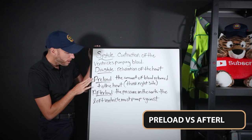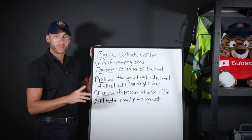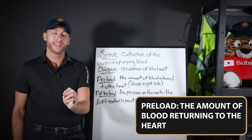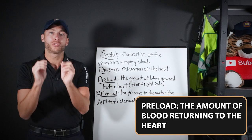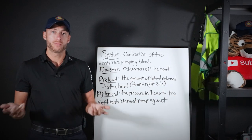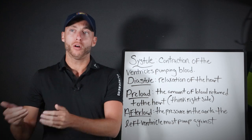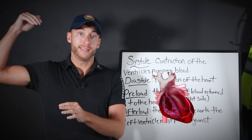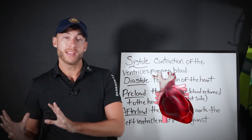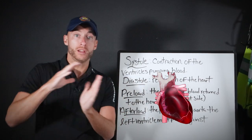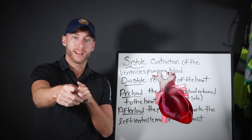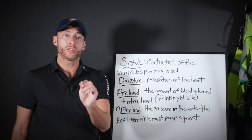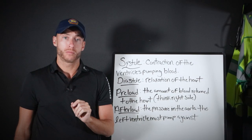Preload versus afterload. Preload, quite simply, is blood returning to the heart. When blood returns to the heart, it comes from the venous system, up through the IVC, down from the SVC, and then it comes into the right atrium. That action — blood returning to the heart — is the amount of preload.